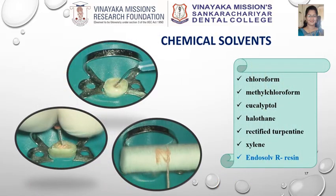Many chemical solvents like chloroform, methyl chloroform, eucalyptol, halothane, rectified turpentine, and xylene are available in the market for gutta percha removal. Endosolv-R is used for dissolving the resin sealer. First, the solvent is injected into the pulp chamber and with the help of files, the softened gutta percha can be removed from the canals.